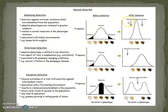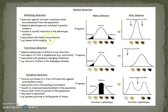Stabilizing selection operates in constant or unchanged environmental conditions — as the name suggests, everything is stabilised. It introduces homogeneity in the population and maintains a particular phenotype. Extreme phenotypes are less adaptive while intermediate phenotypes are more adaptive. It tends to arrest variations and evolutionary change but maintains adaptiveness. Stabilizing selection operates rarely because the environment is rarely constant, and its selection coefficient is also poor. Selection against extreme variations eliminates them from the population, and adaptive phenotypes are retained in greater numbers.